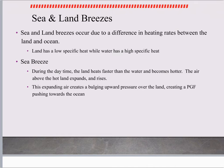A sea breeze — remember, winds are named for the direction they come from, not from where they're going towards. So a sea breeze is winds coming from the sea towards the land. This occurs during the daytime. The land heats faster than the water, so the land gets really hot. If you've ever gone to the beach in the middle of the afternoon and walked on that dry sand with your bare feet, it's very hot — almost to the point where it's painful. This expanding warm air is going to create a bulge upward in terms of pressure over the land.